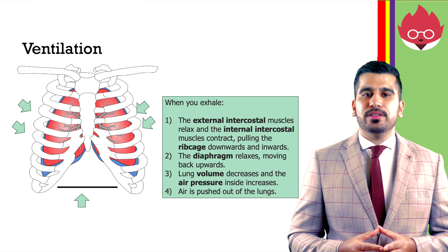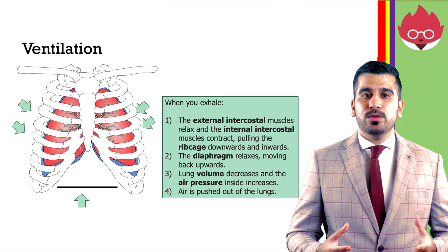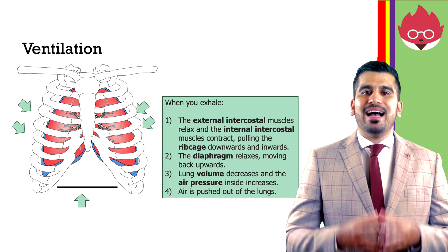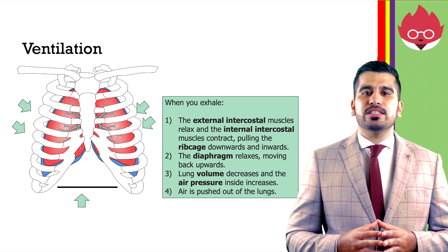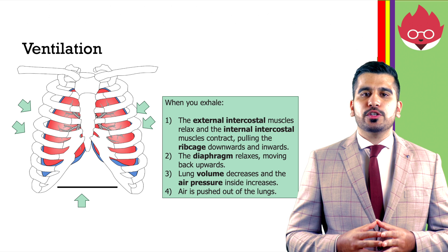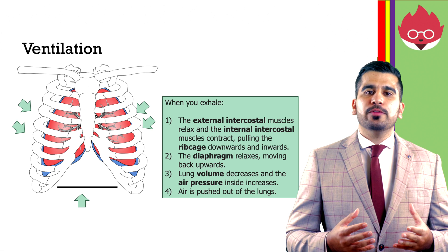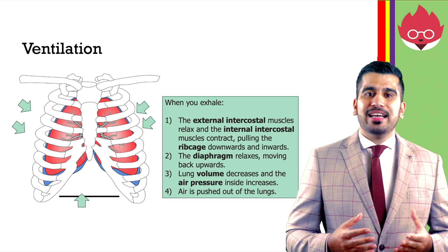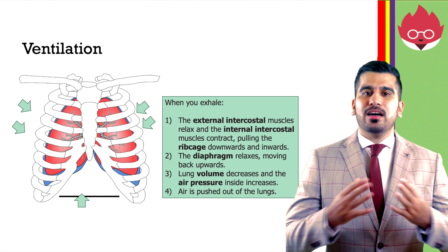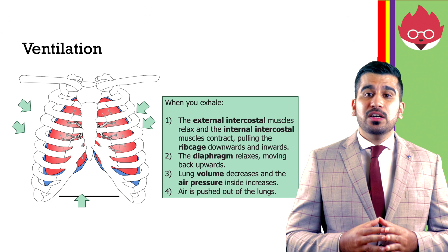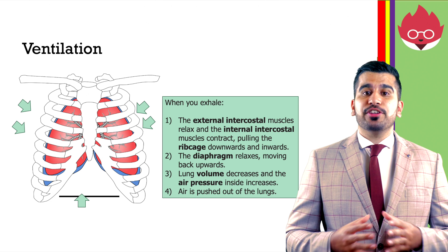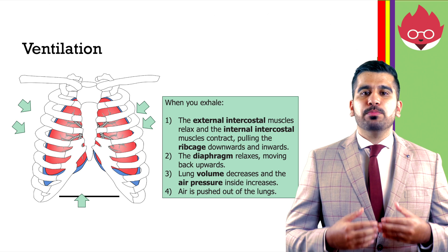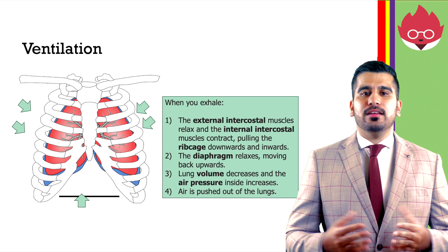During exhalation, when you breathe out, the external intercostal muscles relax and the internal intercostal muscles contract, pulling the ribcage downwards and inwards. The diaphragm relaxes, moving back upwards, the lung volume decreases, and the air pressure inside increases. Air is pushed out of the lungs.